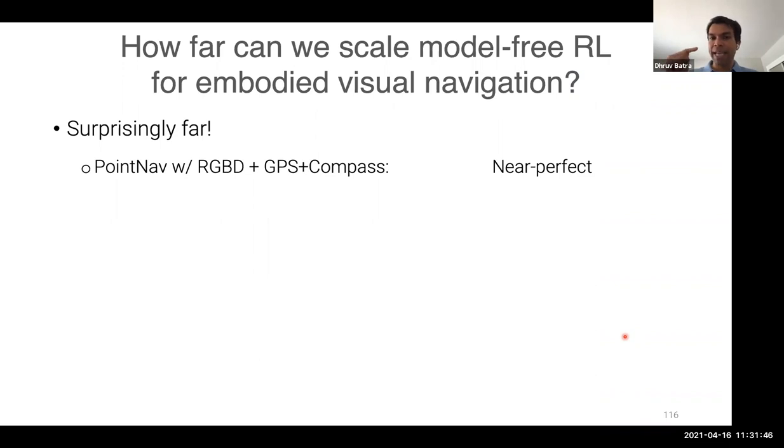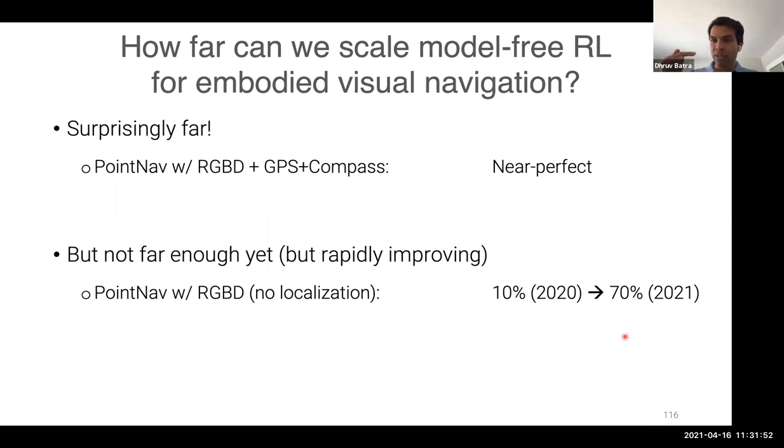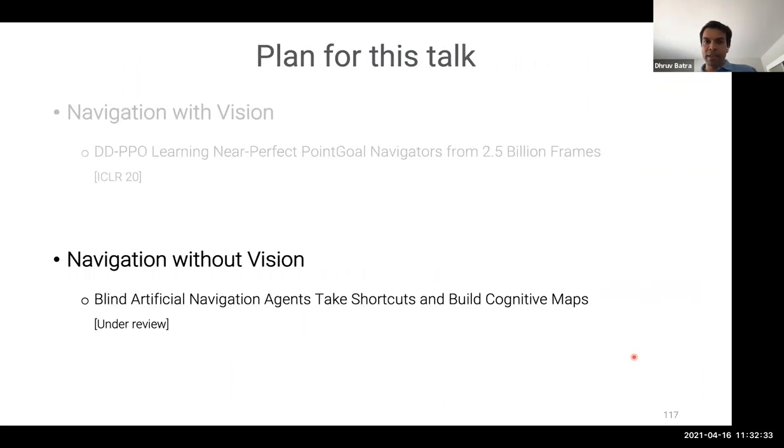In 2019, we were very far away from a hundred percent success. We solved this problem. But I want to be careful that the assumptions we're making is that there is a depth sensor and there is a localization sensor. You need to know how far you have traveled. And that seems to be a particularly important sensor. If you take away the localization sensor, if you don't have that ego motion or GPS and compass sensor, then in 2020, the best performing method was a 10% success. This year we're seeing methods quickly have jumped to 70% success. So we're not far enough yet with large scale model-free reinforcement learning, but it's quickly improving.